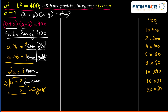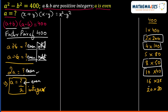So a+b and a-b must both be even. Therefore, we select only factor pairs where both factors are even: 2 and 200, 4 and 100, 8 and 50, 10 and 40, and 20 and 20. These five factor pairs are our candidates.